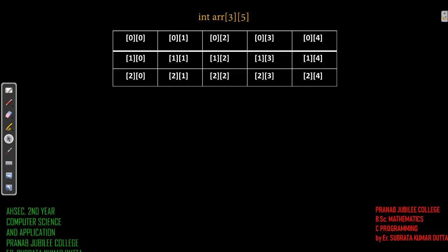Hello students. In our last video we discussed about two dimensional arrays — why it is called array of arrays, why it is called matrices, how we declare the two dimensional array, and how we represent the blocks of the arrays or give the index numbers. So now we will look at how we initialize the array.